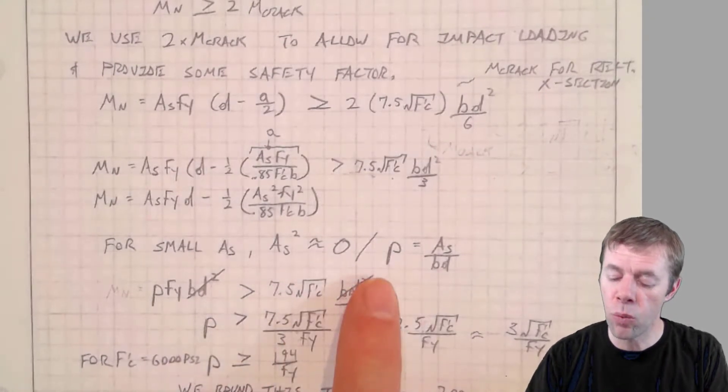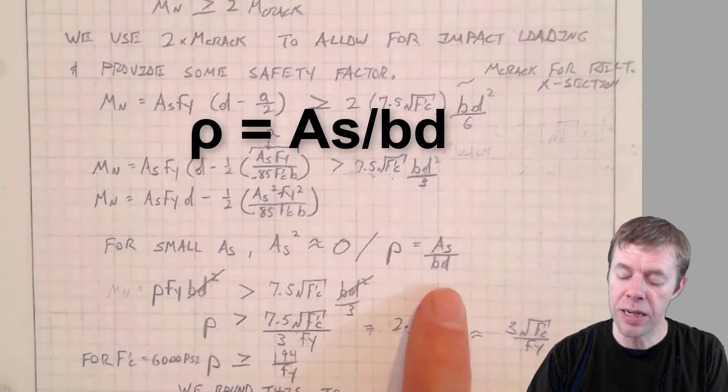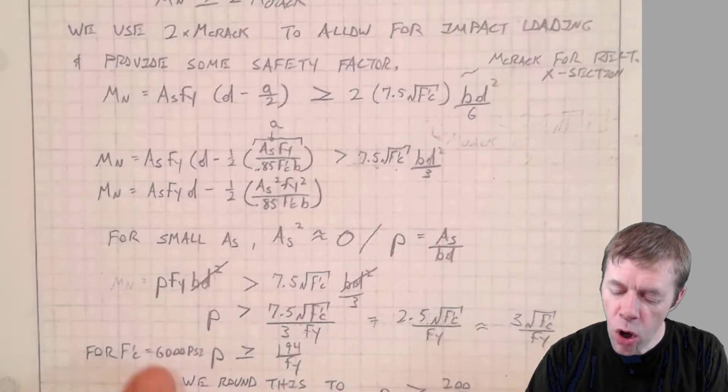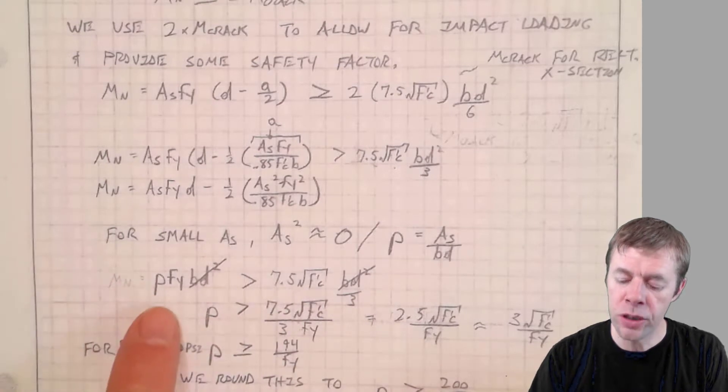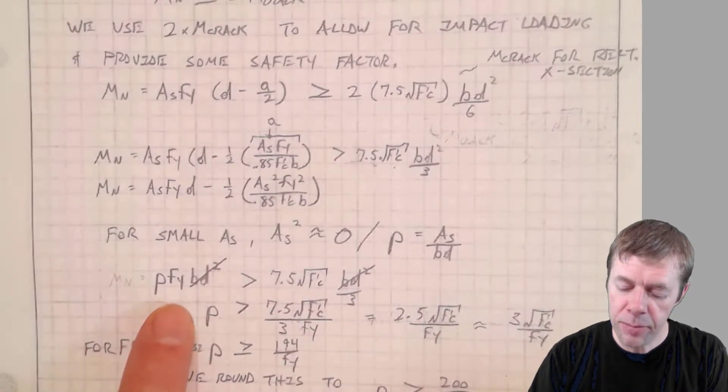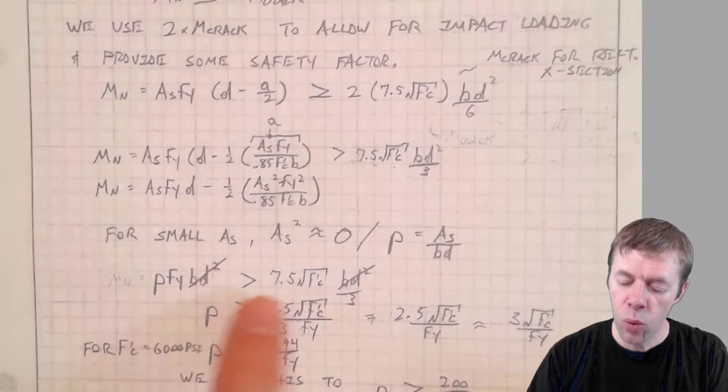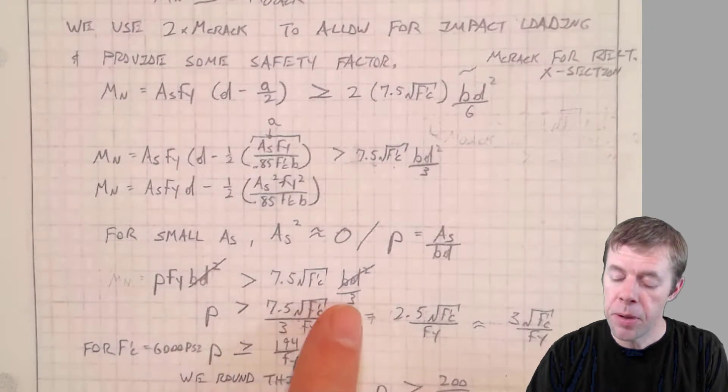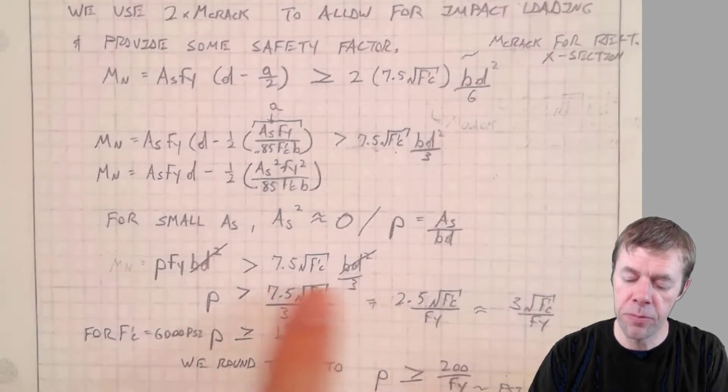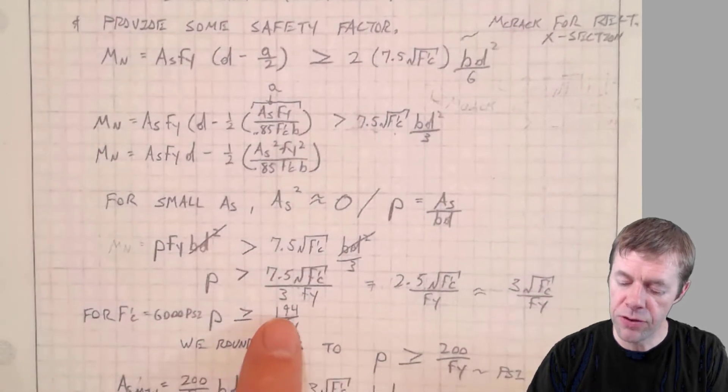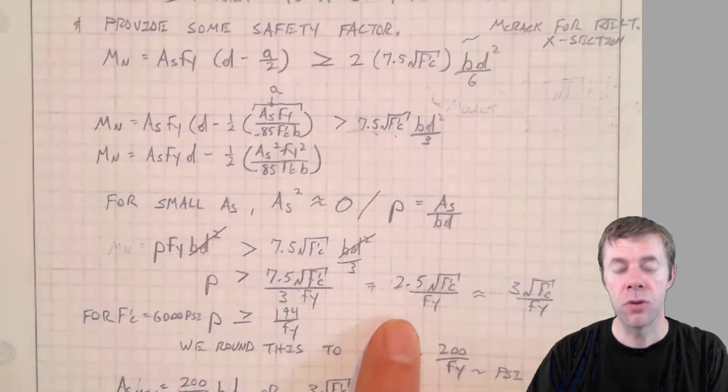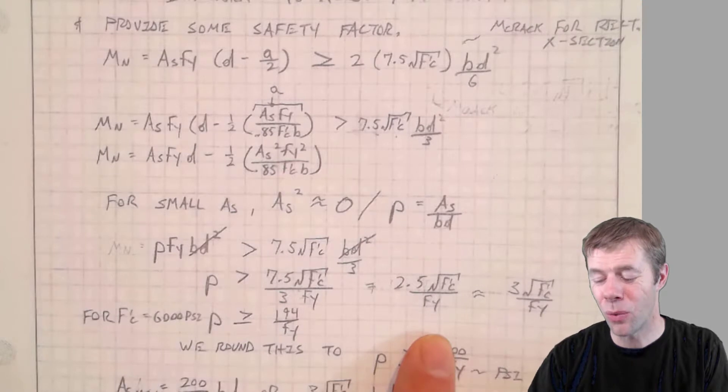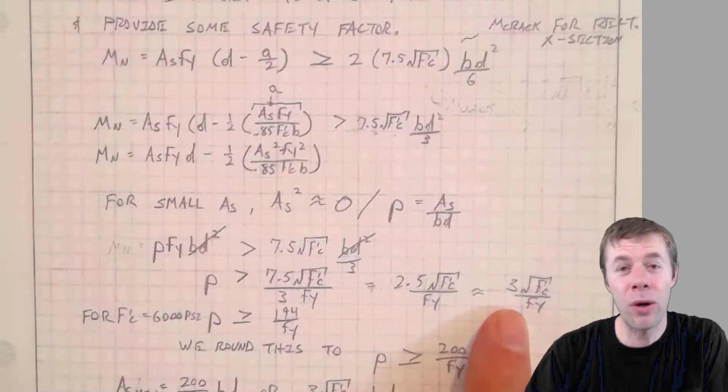We're also going to use rho, our favorite rho. That's AS over BD. That's kind of like this interesting way to compare things. So once we do that, that rho then would be, this whole equation would simplify to be something like rho times FY times BD squared, which would be greater than seven and a half times root F prime C, BD squared over three. We're going to cancel out the BD squareds. We're going to simplify this even further to two and a half. Rho has to be greater than or equal to two and a half times the square root of F prime C over FY. We're going to round that up to three because three is a nice round number.